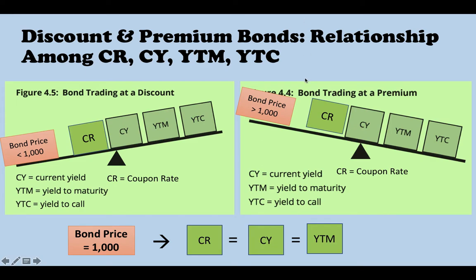Hi, in this video I want to talk about the relationship among the coupon rate, current yield, yield to maturity, and yield to call when a bond is trading at a discount or premium.